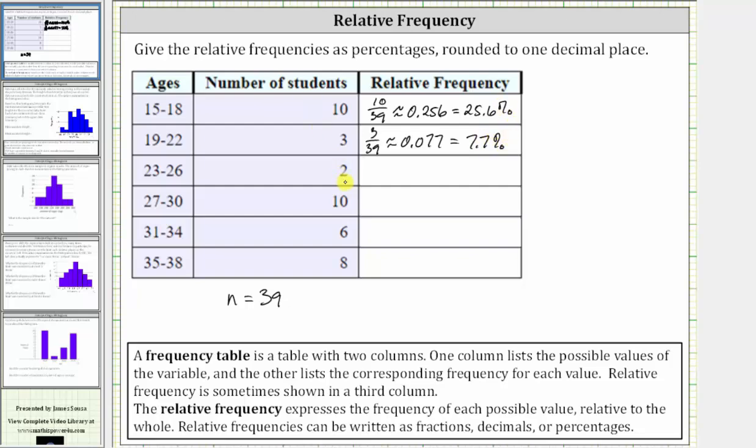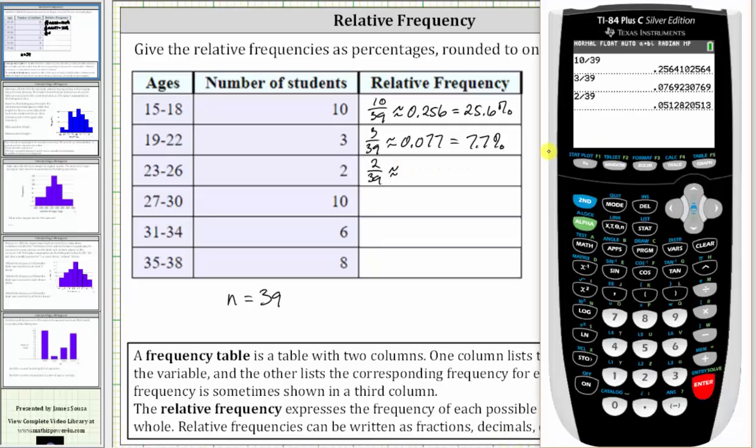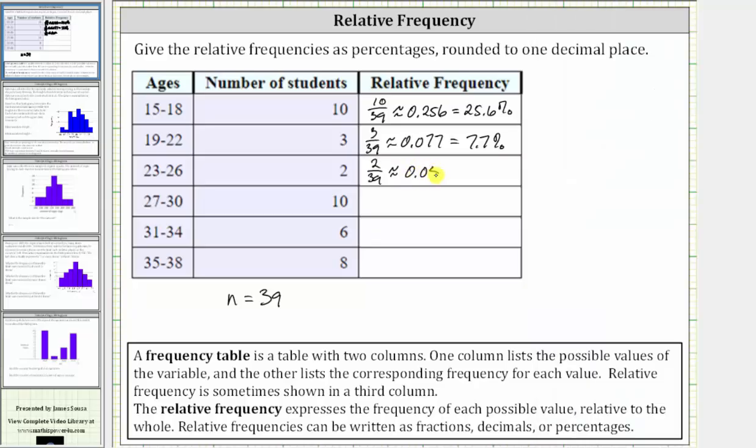Next, there are two students with ages 23 through 26. The relative frequency is 2/39, which is approximately 0.051, which equals 5.1%.